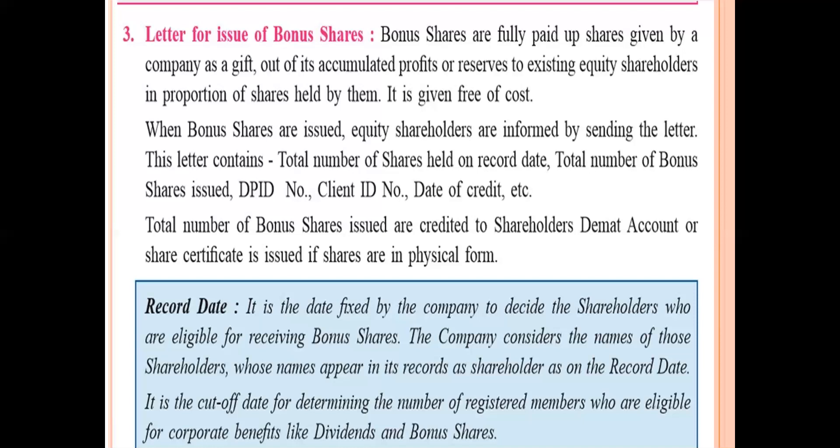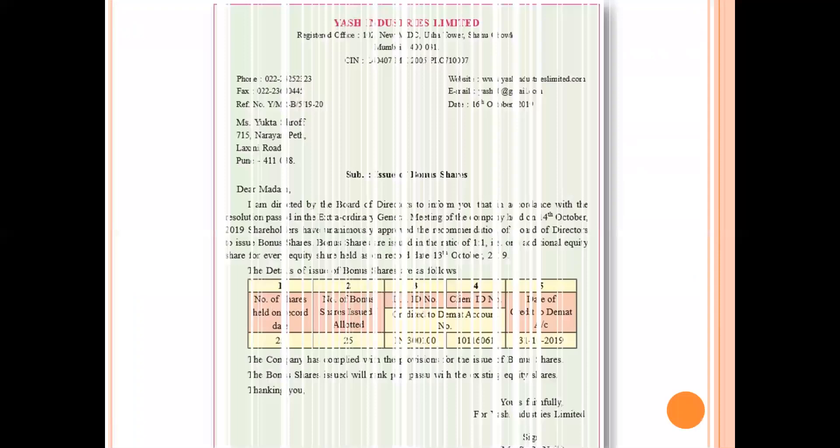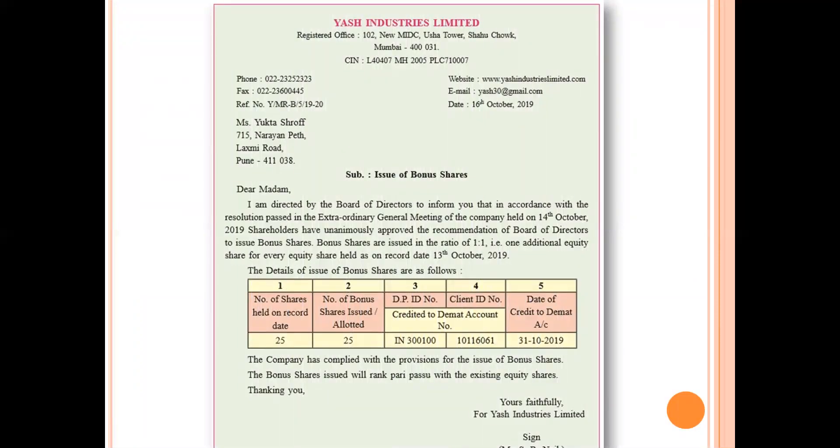It is similar to when merit lists come out for college admissions after your tenth or twelfth result. If you are willing to get admission in a specific college, you have to wait for the cut-off percentage — after a certain percentage, you won't get admission. Similarly is the record date: after a specified date given by the board of directors, no other person will be considered. Only those whose names appear on that date will be eligible for getting the bonus shares. After this date, if your name comes, you won't get any bonus shares.